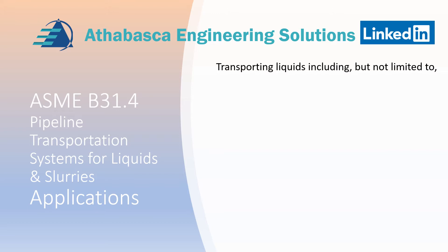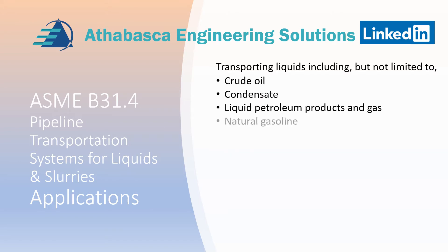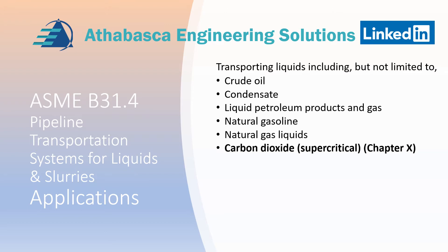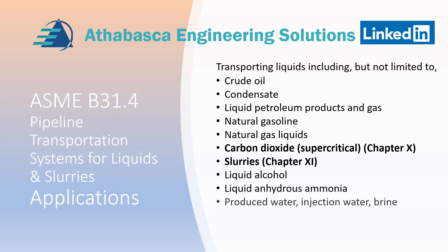B31.4 also has requirements for the types of liquids transported. The list includes crude oil, condensate, liquid petroleum products and gas, natural gasoline, natural gas liquids, carbon dioxide — such as supercritical CO2 for carbon sequestration in chapter 10 — slurries imported from B31.11, liquid alcohols, liquid anhydrous ammonia, produced water, injected water, brine, and biofuels. Please note these aren't exact definitions; you need to refer to the code.